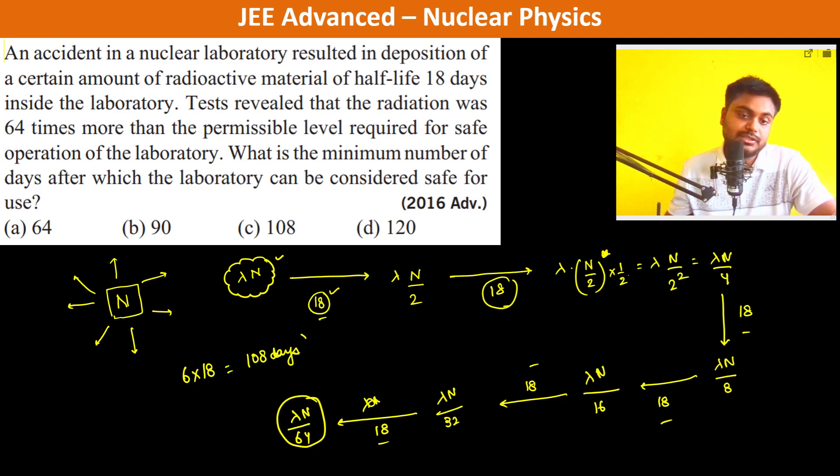So after 108 days, it goes under permissible level. Here, one thing we should remember is, actually, 18 days is a very small half-life, whereas different radioactive elements like uranium have their half-life in years, and sometimes it's hundreds and thousands of years.